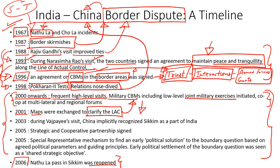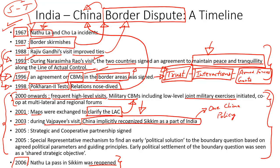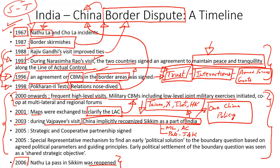During the 1993 visit, a very important agreement was signed providing a mechanism to maintain peace and tranquility at the Line of Actual Control — a mechanism still used today. A follow-up agreement in 1996 provided confidence-building measures in border areas, including frequent interactions between armed forces and governments. However, this progress suffered a setback when India tested nuclear weapons in 1998. Since India's nuclear program was designed to counter China's arsenal, China led efforts at the UN alongside the US to impose sanctions against India.